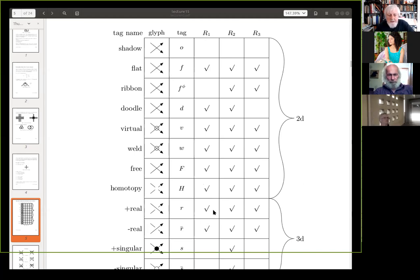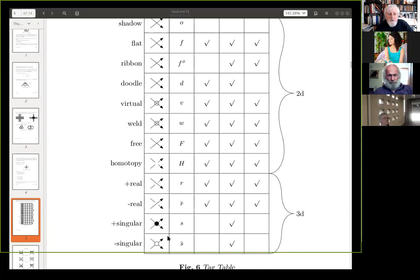Real crossings, you see, have... They satisfy all the Reidemeister moves, either the plus real or the minus real. And then there's singular, which just satisfies the R2 move. These, incidentally, these are called two-dimensional because their inverse is the same as, you know... In other words, when you do R2, you don't have to look at a different version of the crossing to do R2. But for three-dimensional ones, you do. And these are the only three-dimensional ones I know about, so...